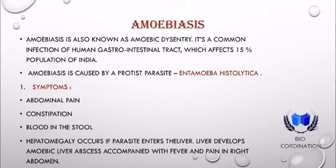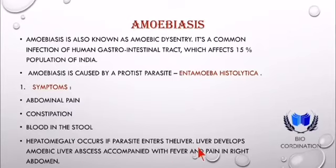Hepatomegaly क्या होता है? अगर infection ज्यादा severe हो जाता है तो liver में swelling आ जाती है, उसी को hepatomegaly कहते हैं। यह occurs if the parasite enters the liver — liver develops amoebic liver abscess, accompanied with fever and pain in the right abdomen.